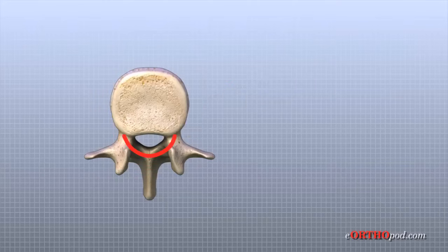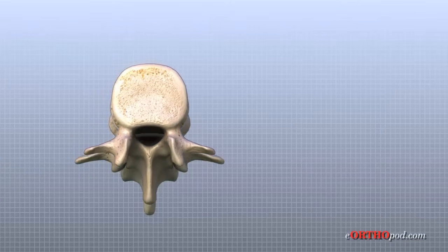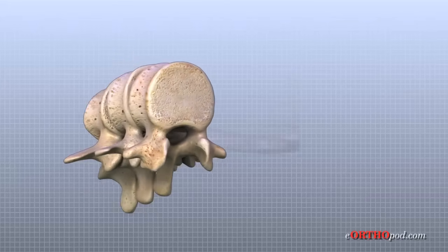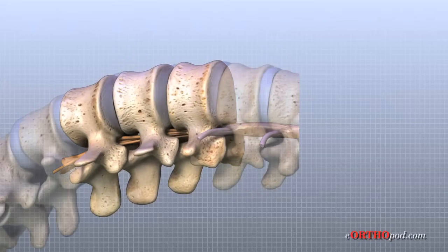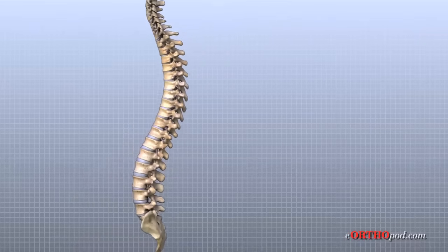A bony ring attaches to the back of each vertebral body. When the vertebra are stacked on top of one another, these rings form a hollow tube called the spinal canal. This bony tube surrounds the spinal cord as it passes through the spine. Just as the skull protects the brain, the bones of the spinal column protect the spinal cord.